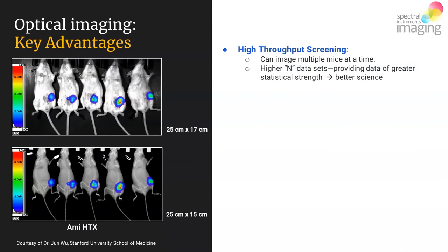Optical is fast, and beyond being fast, it has a large field of view. This makes it truly a high-throughput imaging modality — fast, with a large FOV allowing you to image as many as five to ten mice at a time, enabling you to create a large dataset easily, leading to strong statistical data and, in effect, better science.